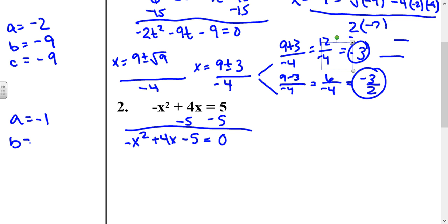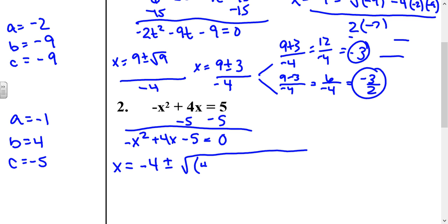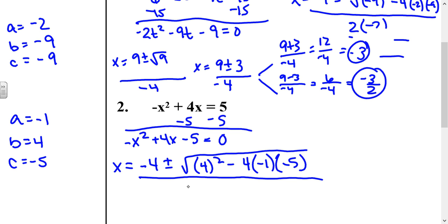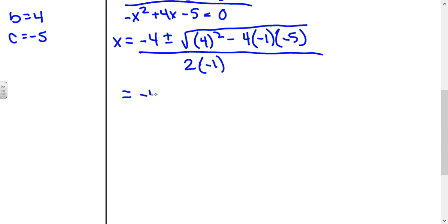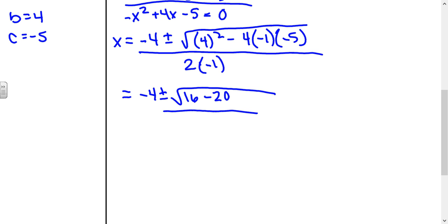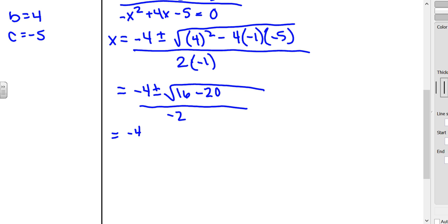So a equals negative 1, b equals 4, and c equals negative 5. Plugging into the formula: x equals the opposite of b, so negative 4, plus or minus the square root of b squared minus 4 times a times c, all over 2 times a. Simplifying: negative 4 plus or minus the square root of 4 squared, which is 16; then negative 4 times negative 1 is positive 4, times negative 5 is negative 20, all over negative 2.